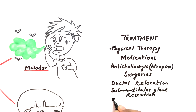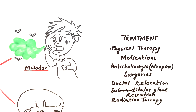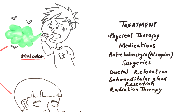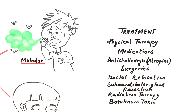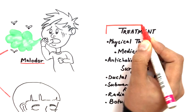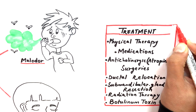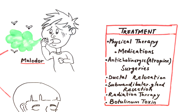Radiation therapy can also be used for patients who are not candidates for surgery or other medical therapy. In addition, botulinum toxin has also proven to be effective in treating sialorrhea. It works by reversibly blocking the presynaptic release of acetylcholine at the neuroglandular junction.